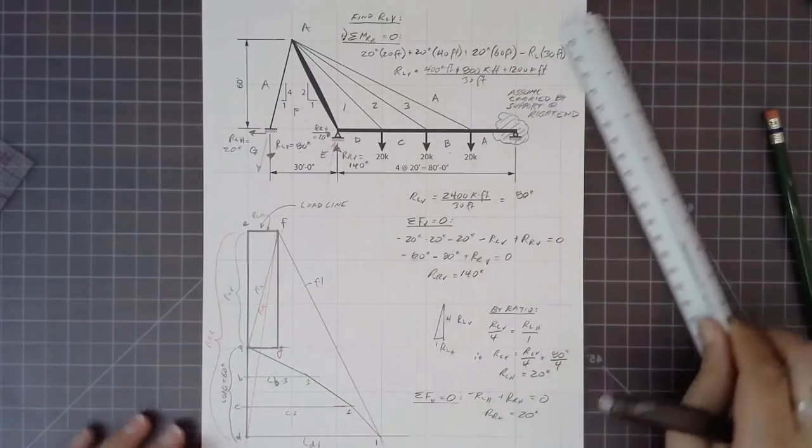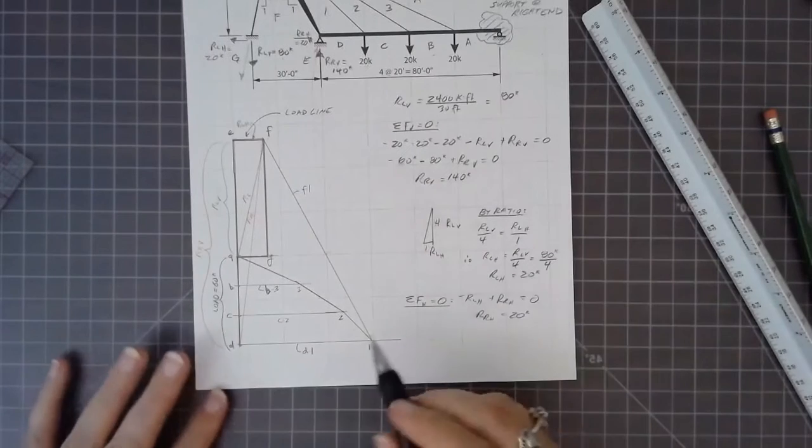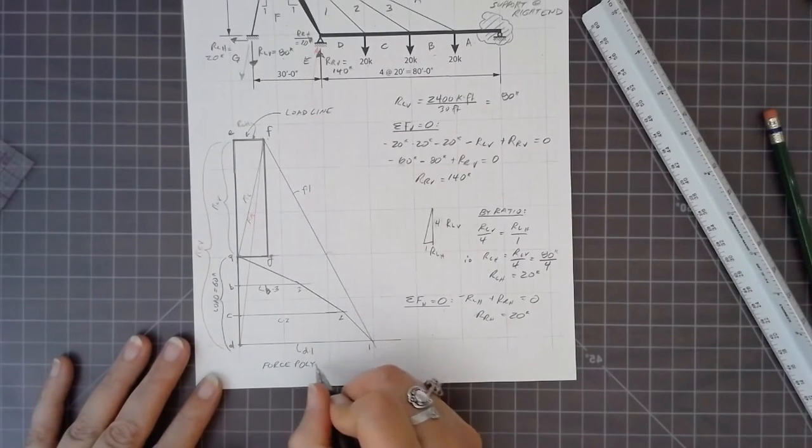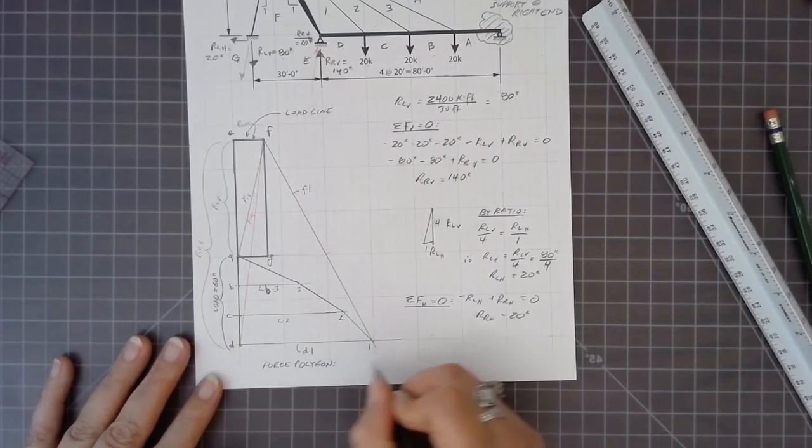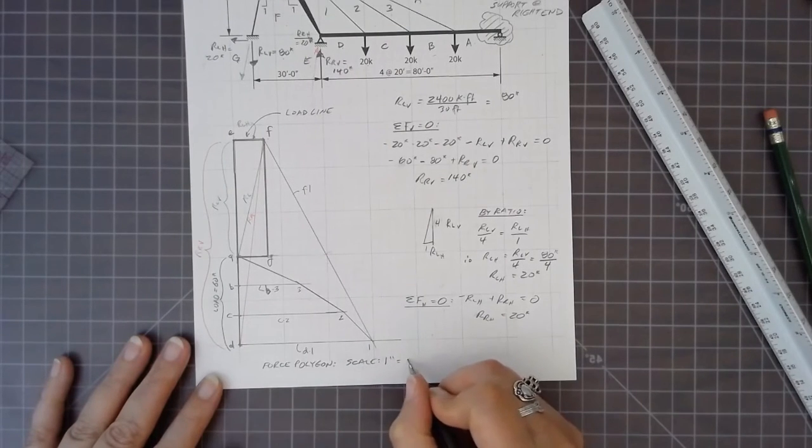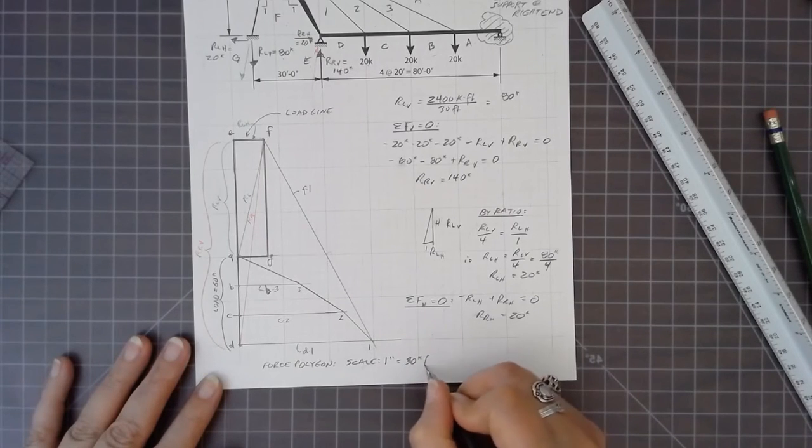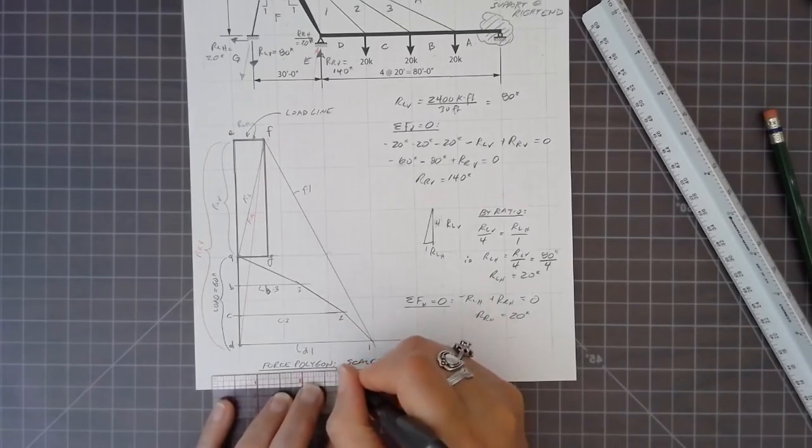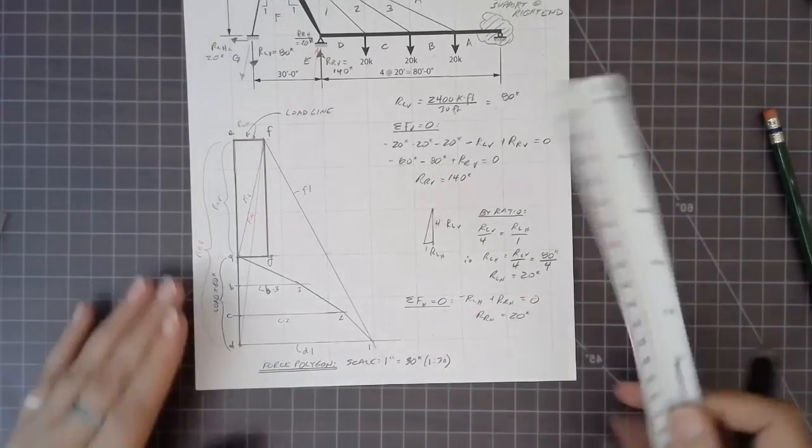And there's our force polygon at a scale of 1 to 30. That means 1 inch is 30 kips.